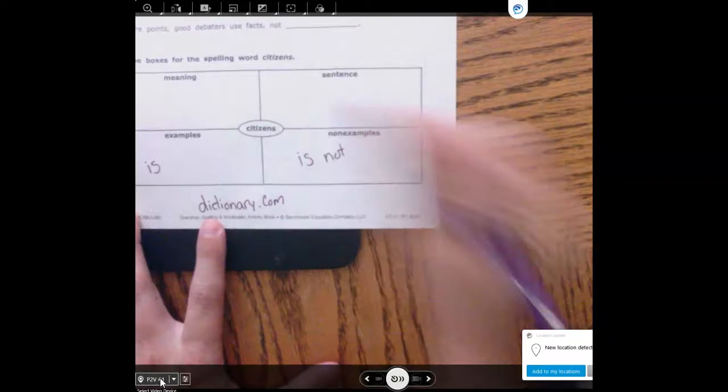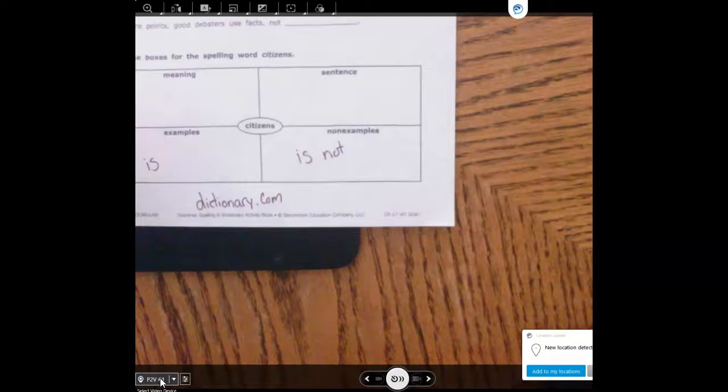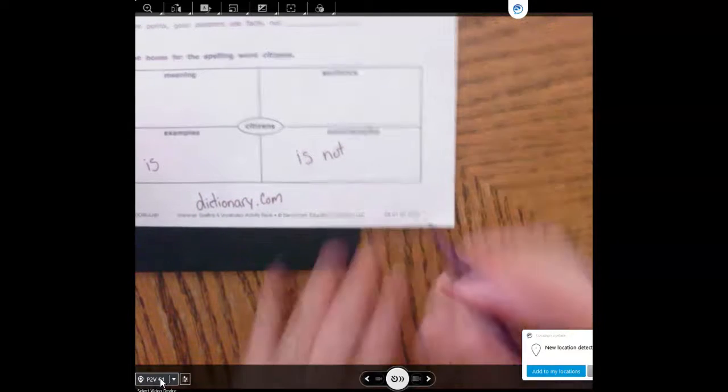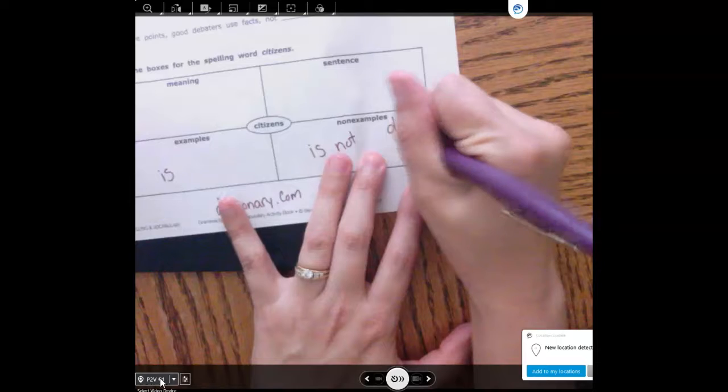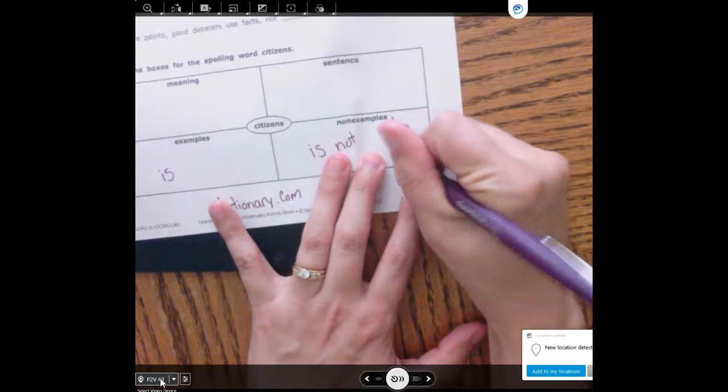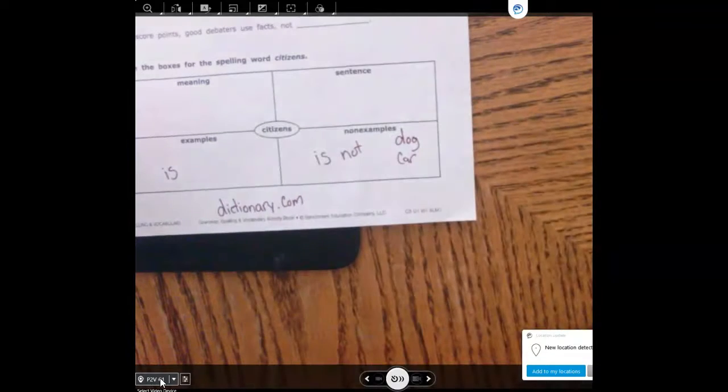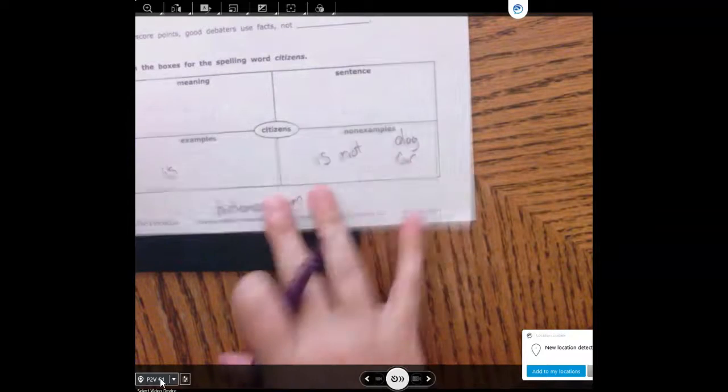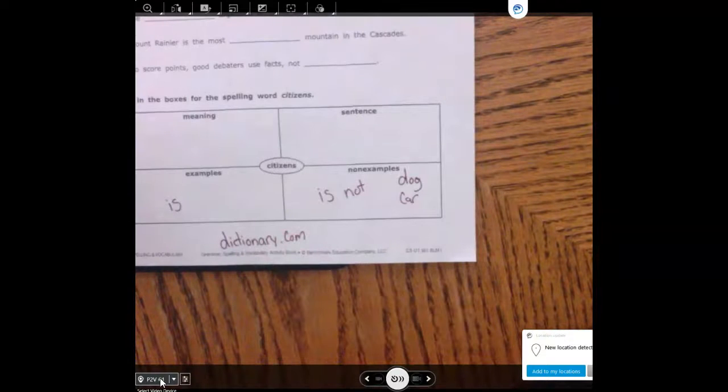So a citizen is this and is not. That's what this means. Non-examples means a citizen is not this. So for example, a citizen is not a dog. A citizen is not a car. I mean these ones are a little silly but those are non-examples.